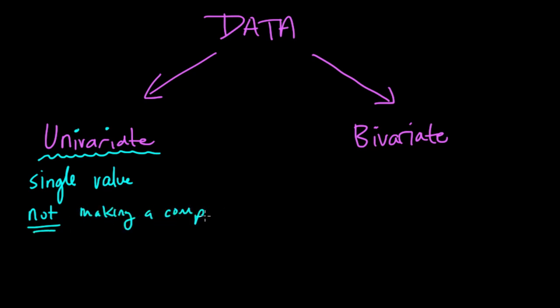Whereas in bivariate data, the opposite's happening here. With bivariate data, we have two values that are related. And we're using those two values to make a comparison. So we're going to make comparisons.